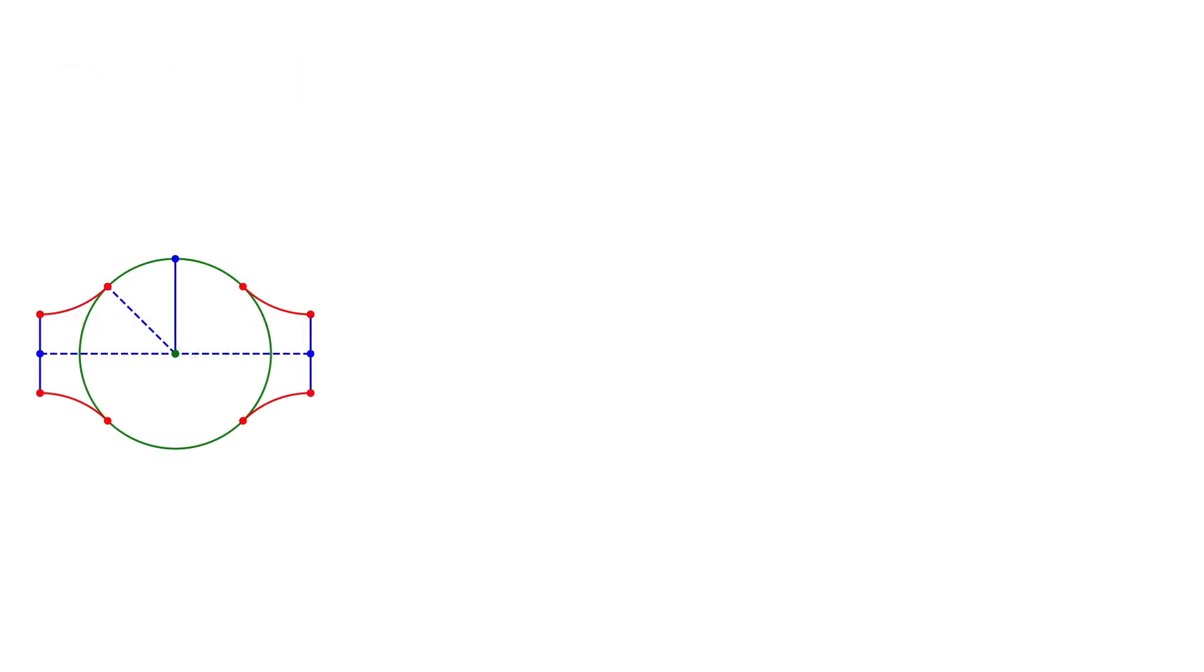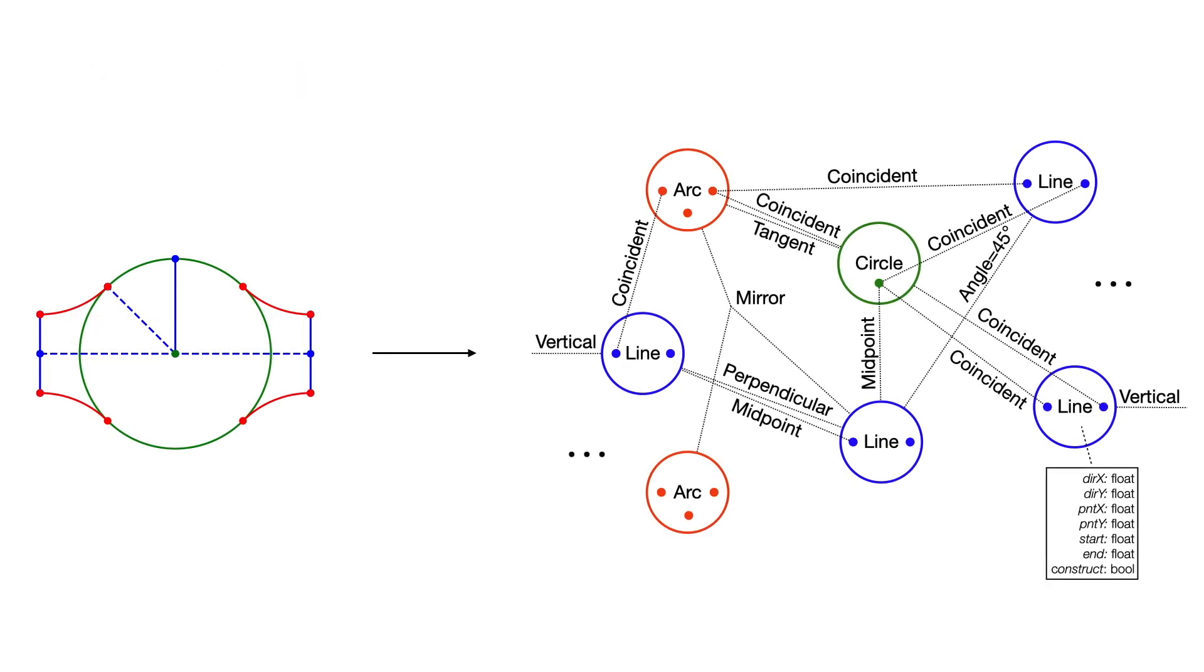Each sketch is represented with the ground-truth geometric constraint graph specifying its construction, where edges denote precise relationships imposed by the designer that must be preserved between specific primitives, the nodes of the graph.